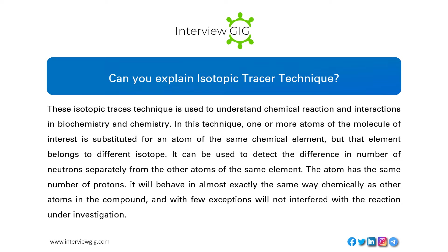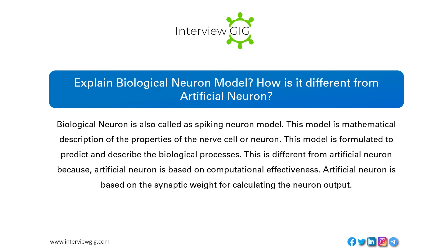A biological neuron is also called a spiking neuron model — a mathematical description of the properties of the nerve cell. This model is formulated to predict and describe biological processes. It differs from an artificial neuron, which is based on computational effectiveness and uses synaptic weights for calculating the neuron output.